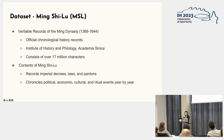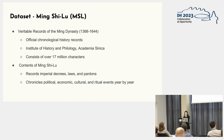The second part covers our dataset. Our primary data is Ming Shilu. Spanning over 270 years and containing multiple versions, we utilize the version from the Institute of History and Philology Academy in Taiwan, which consists of over 17 million characters. Ming Shilu is distinguished by its diverse range of information, containing imperial decrees, laws, pardons, and records spanning various facets of politics, economy, culture, and ritual. This wealth of data enables us to gain a comprehensive understanding of historical events from multiple perspectives.